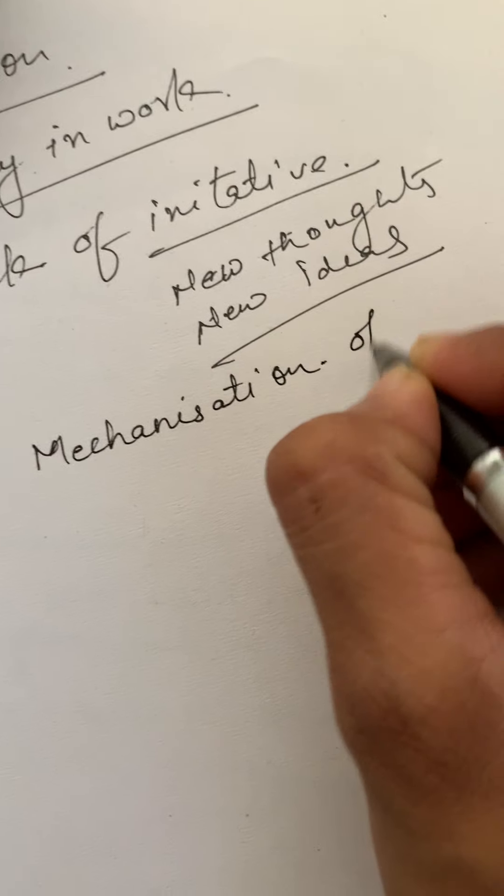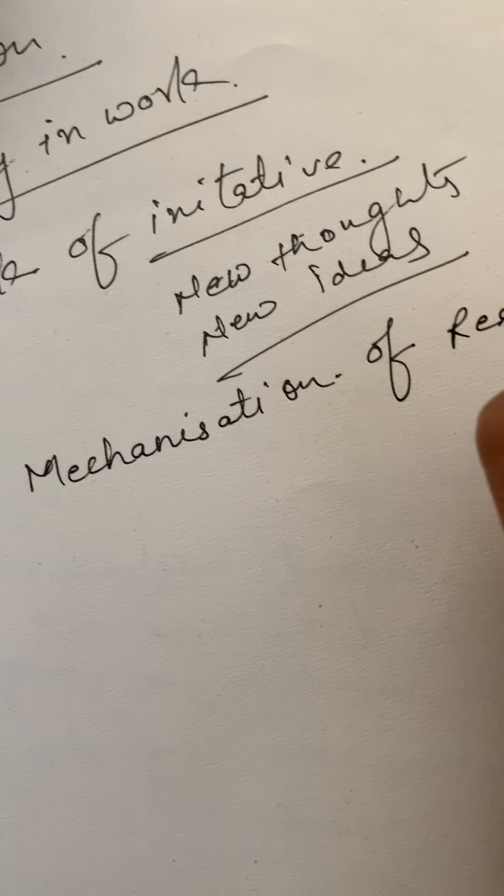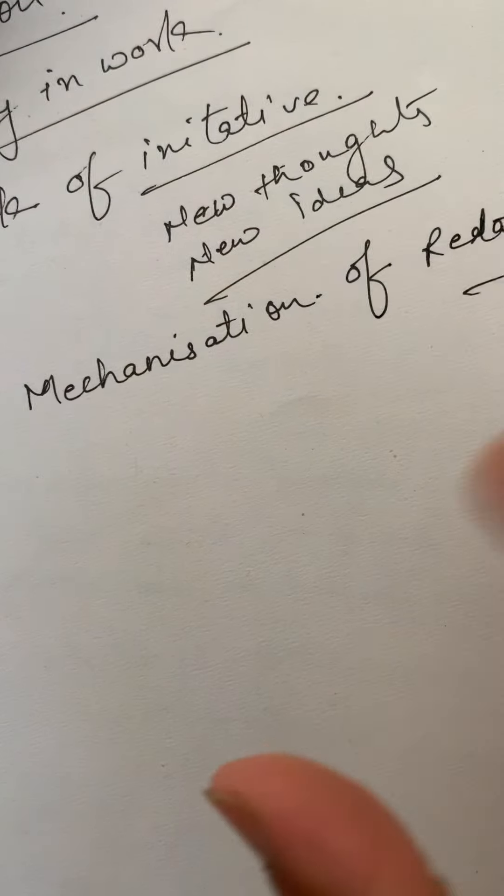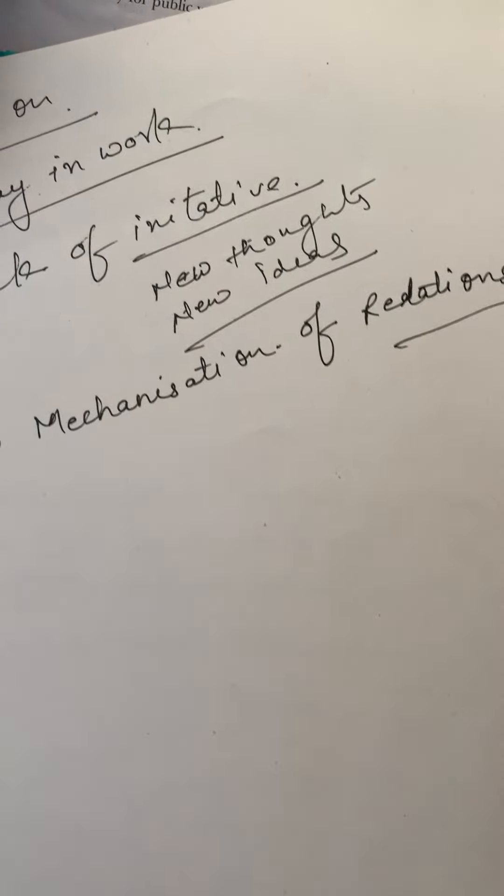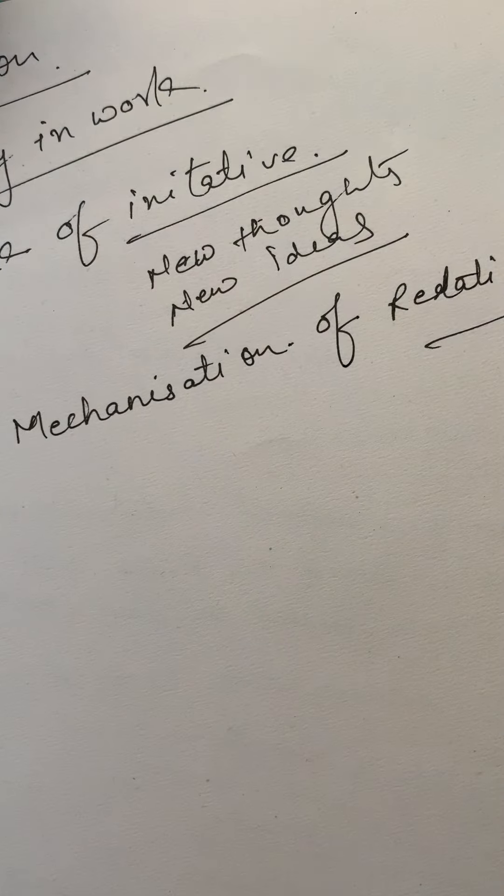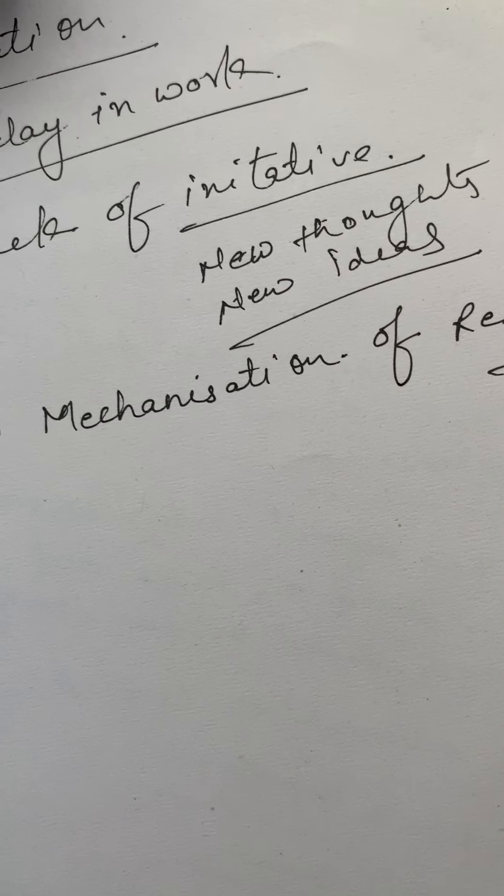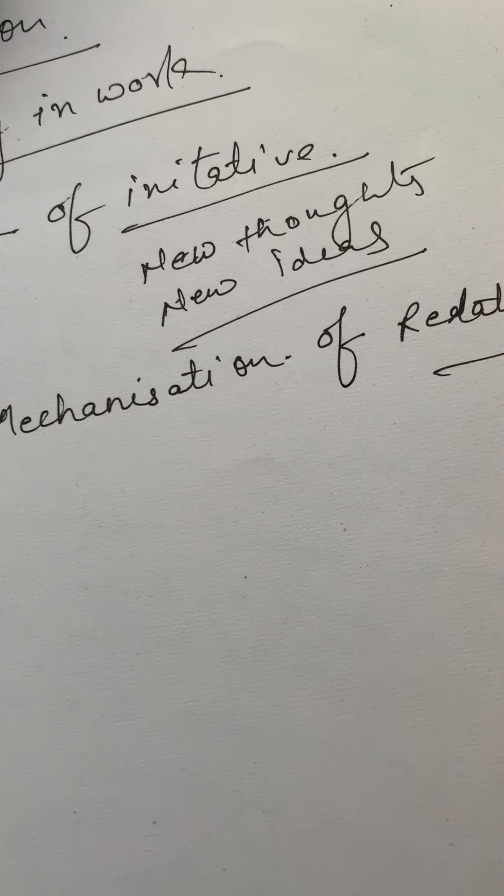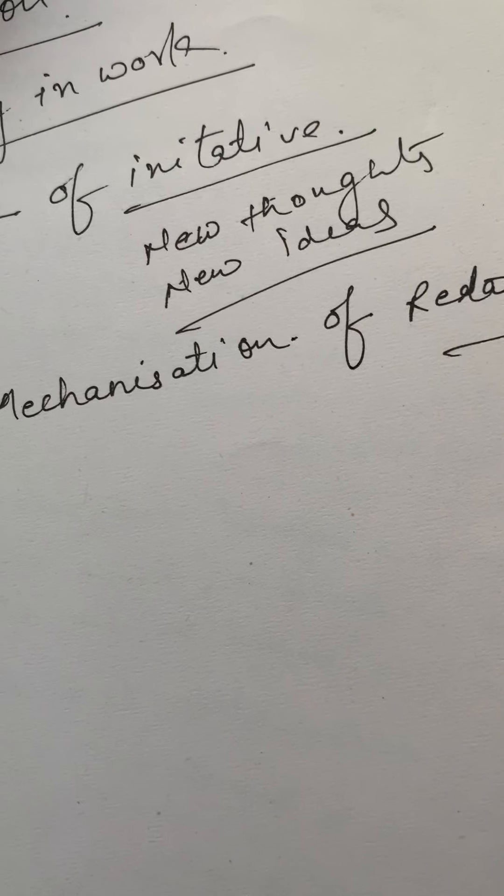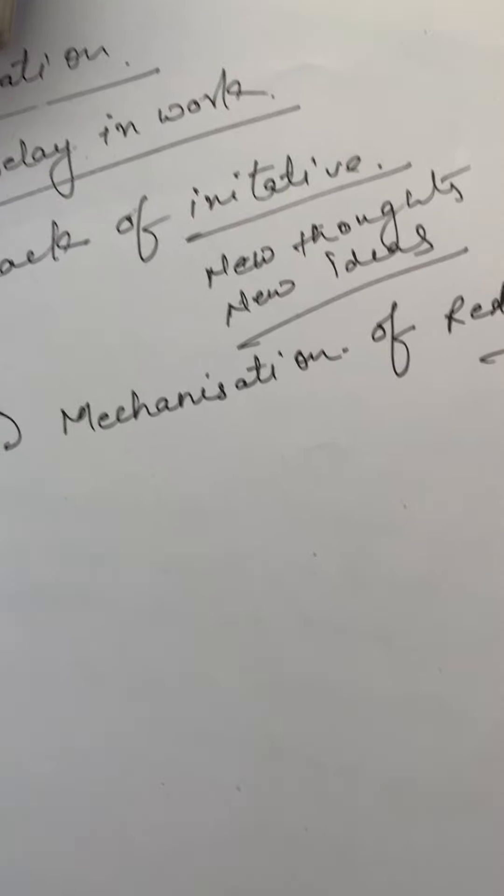Mechanization of relations - relationship is defined and everyone is formal, there's no informal conversation. Some people's knowledge is not exploited. If you have some knowledge, it is not known to be exploited.